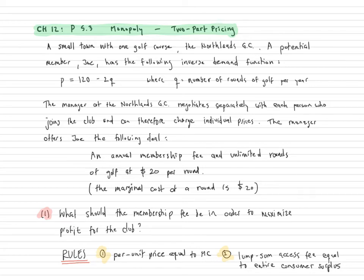Hello, in this video I want to talk about problem 5.3 in chapter 12. The problem deals with a monopoly who is using two-part pricing.